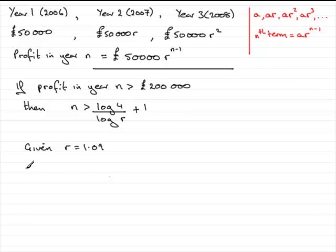So if we do that, we would therefore have N is greater than the log of 4 divided by the log of 1.09 and then add 1. And if you do that on your calculator, you should find that you get N is greater than 17.086 and so on.